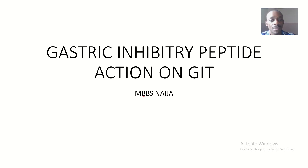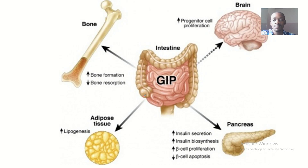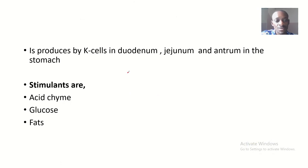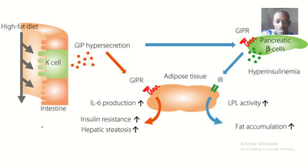We're talking about gastric inhibitory peptide. Gastric inhibitory peptide is produced by K cells in the duodenum, jejunum, and antrum of the stomach. The stimulants for production of gastric inhibitory peptide are acid chyme, glucose, and fats.